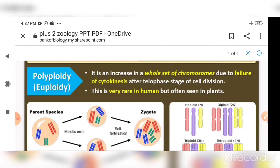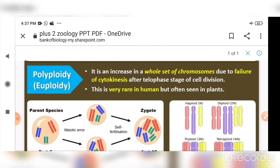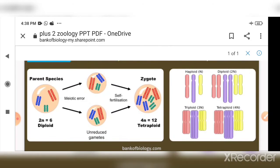When there is no division of the cytoplasm and no formation of two cells, then in one cell there are two whole sets of chromosomes. This condition is known as polyploidy — it is an increase in a whole set of chromosomes due to failure of cytokinesis after the telophase stage of cell division.